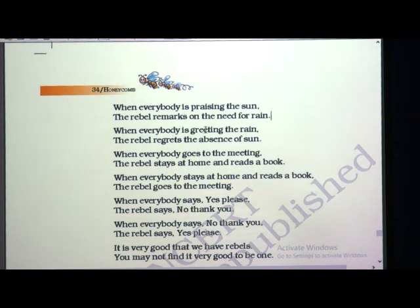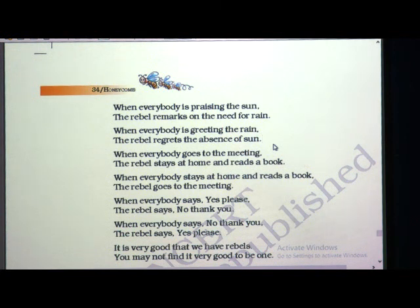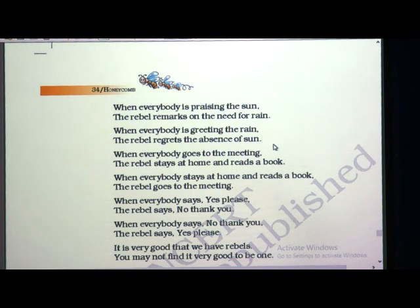When everybody is greeting the rain, the rebel regrets the absence of sun. When everyone says the rain is important, they enjoy playing in the rain, the weather is nice, and we see the rainbow — that time the rebel will regret the absence of sun. He will say there is no sunlight or sun heat because of the rain, and will talk about the sun instead of the beauty of the rainy season.